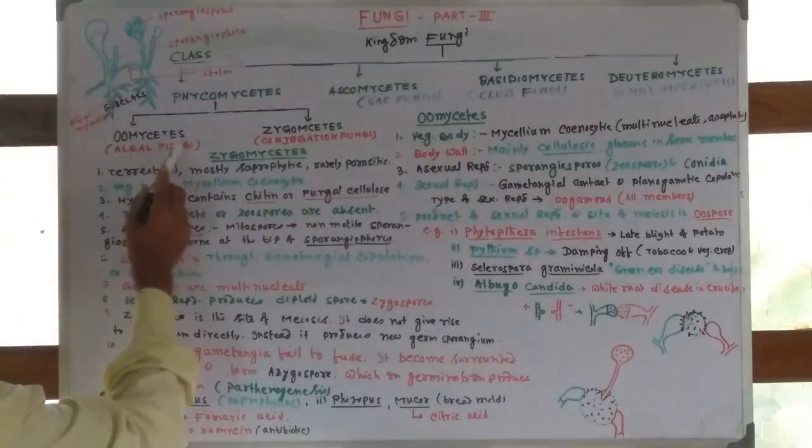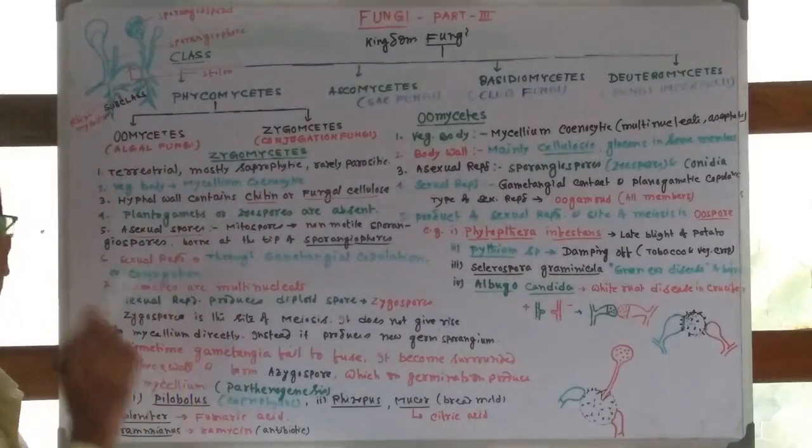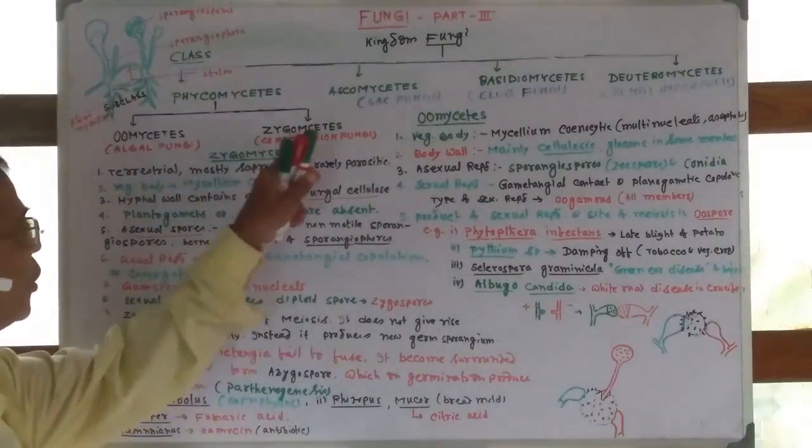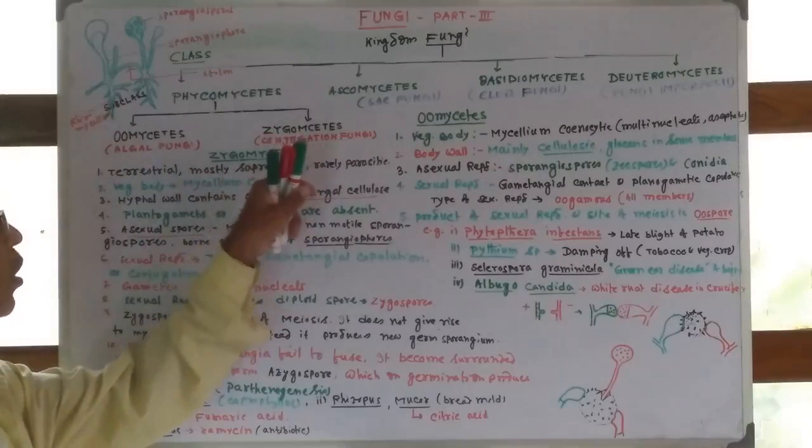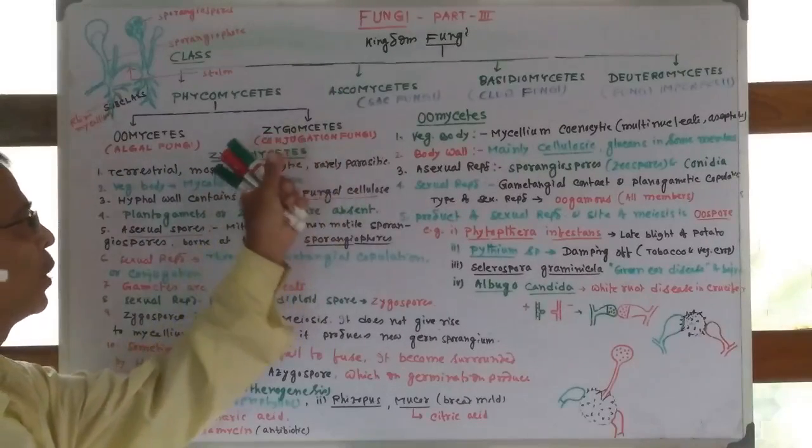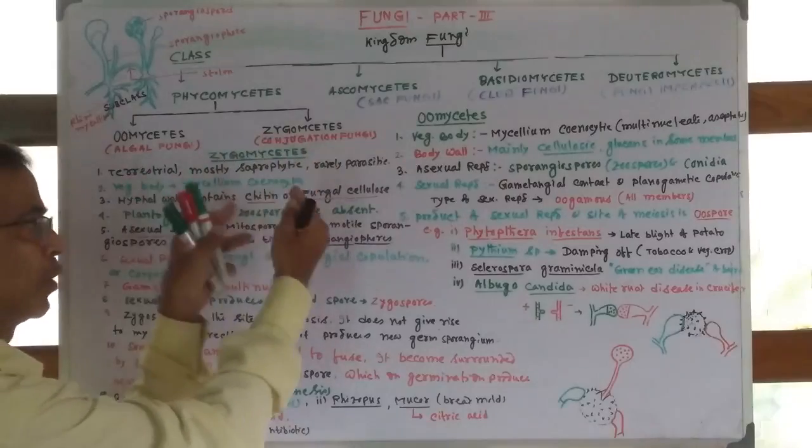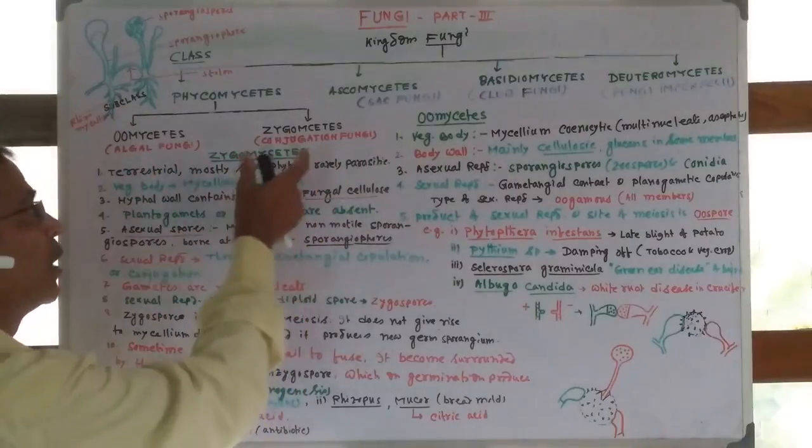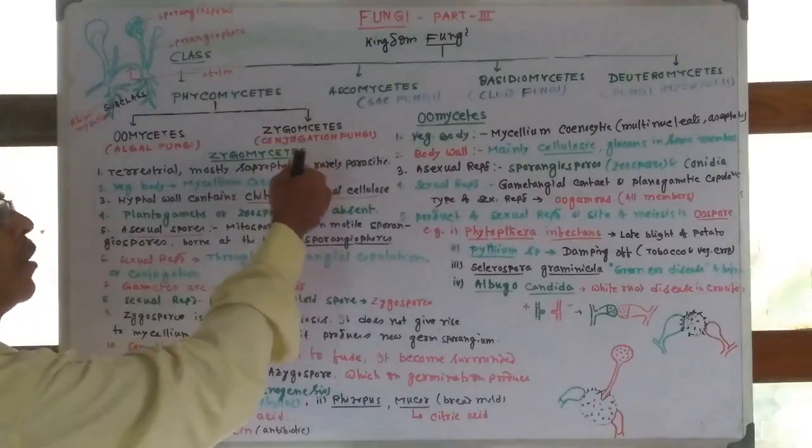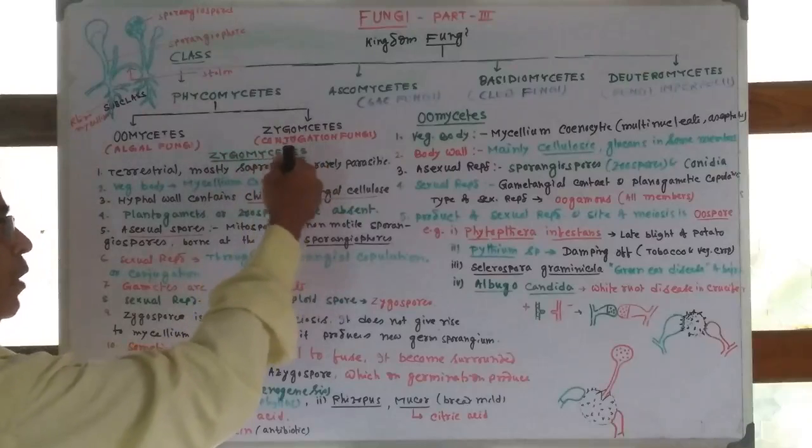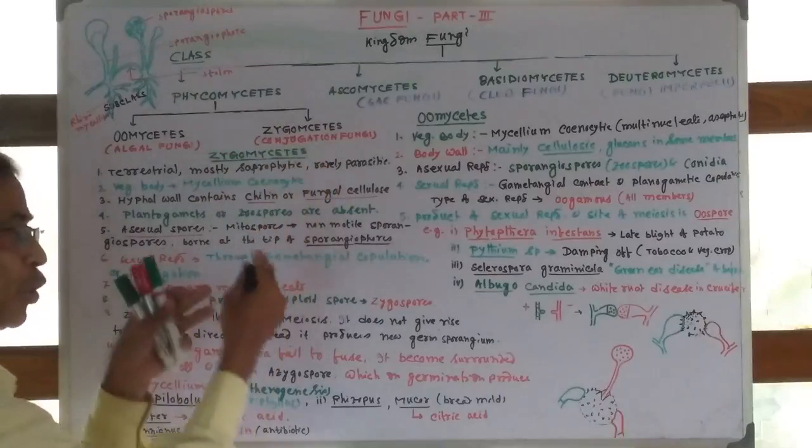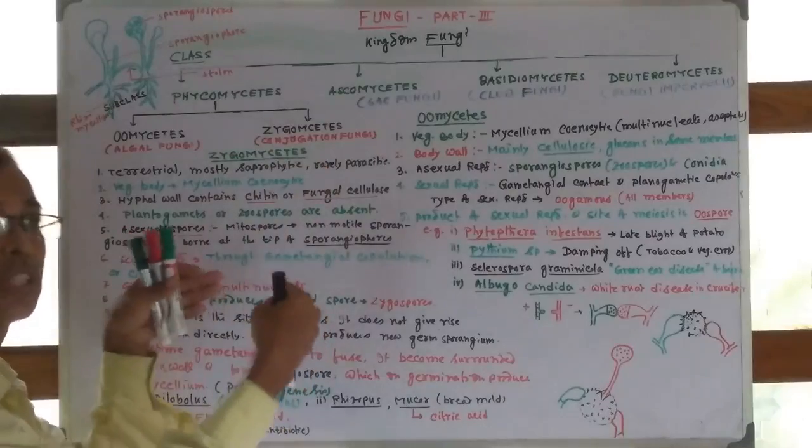Phycomycetes is subdivided into two subclasses: Oomycetes, also called algal fungi, and Zygomycetes, also called conjugation fungi because during sexual reproduction they use a conjugation tube between the two opposite sex thalli.